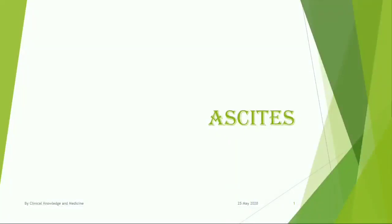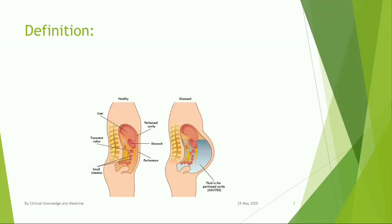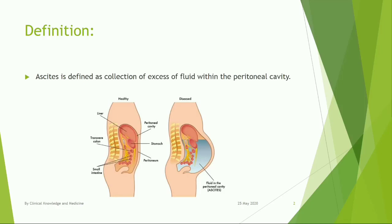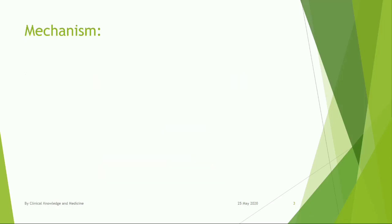Hello everyone, this video is about ascites. Definition: ascites is defined as the collection of excess fluid within the peritoneal cavity.